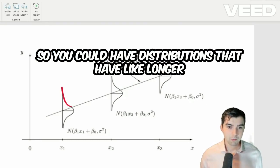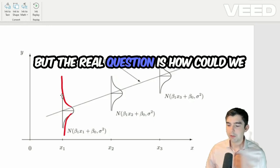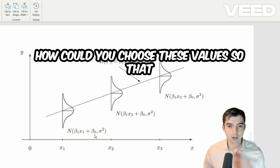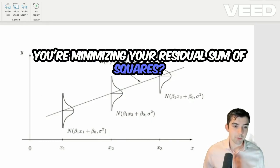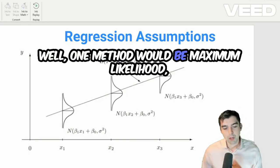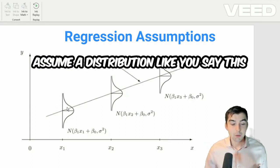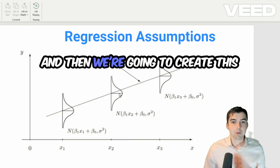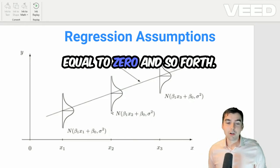So you could have distributions that have longer tails than a normal distribution, and that's fine. But the real question is, how can we choose the best values of beta? How could you choose these values so that you're minimizing your residual sum of squares? Well, one method would be maximum likelihood, which is the statistical method, where you assume a distribution, like you say these are all normal distributions. And then we're going to create this mathematical construct, take the derivative, set it equal to zero, and so forth.